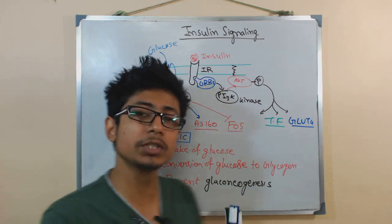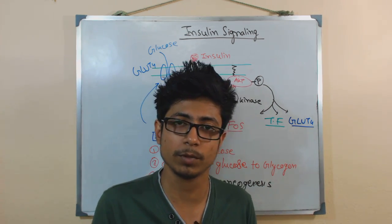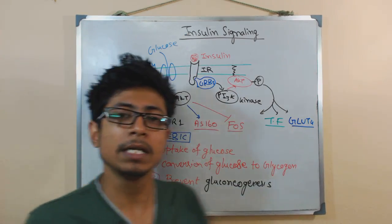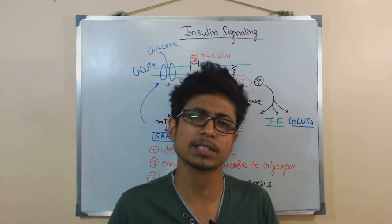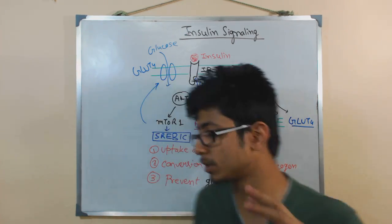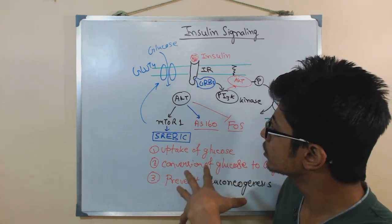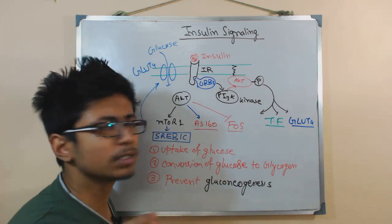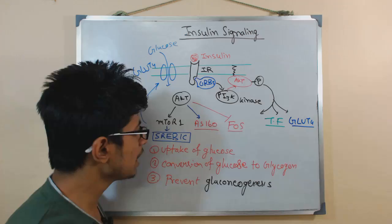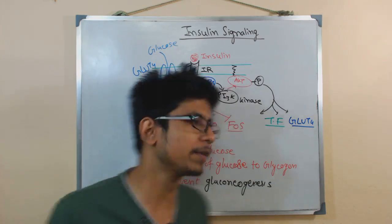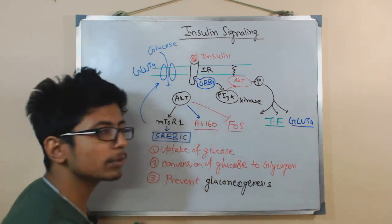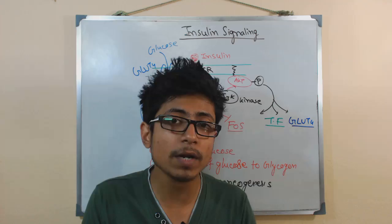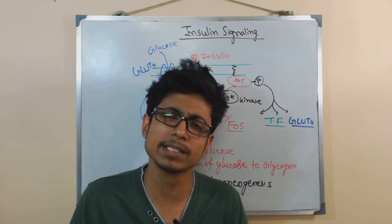AKT also shuts down the expression of FOXO, a gene responsible for producing anti-insulin effects. So it is not only important to activate the proteins we want, but also to shut off expression of genes responsible for any opposing effects. This is how the insulin signaling works at a basic level. If you want more details, such as how protein kinase A, phosphorylase kinase, and other kinases are involved in glucose-to-glycogen conversion, those details are covered in other videos.